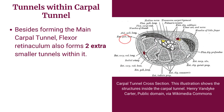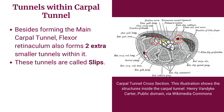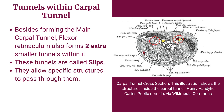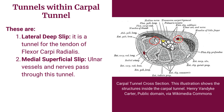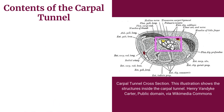Besides forming the main carpal tunnel, the flexor retinaculum also forms two extra smaller tunnels within it, called slips, which allow specific structures to pass through. The lateral deep slip is a tunnel for the tendon of flexor carpi radialis. The medial superficial slip allows ulnar vessels and nerves to pass through.